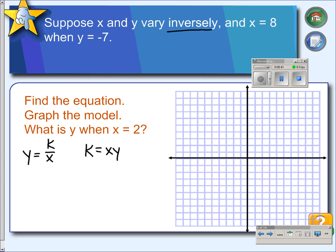So, if we multiply 8 times negative 7, we get negative 56, so our equation will be y equals negative 56 over x.